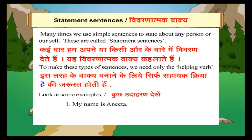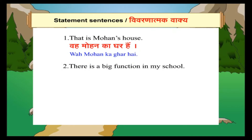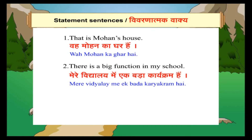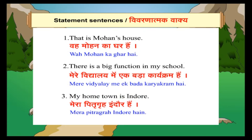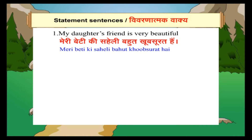My name is Anita. (मेरा नाम Anita है.) That is Mohan's house. (वह Mohan का घर है.) There is a big function in my school. (मेरे विद्यालय में एक बड़ा कार्यक्रम है.) My hometown is Indore. (मेरा पित्रग्रह Indore है.) My daughter's friend is very beautiful. (मेरी बेटी की सहेली बहुत खूबसूरत है.)